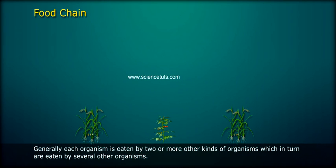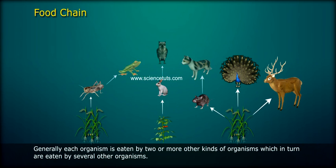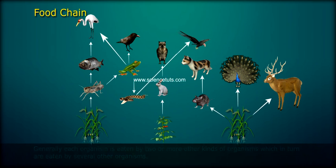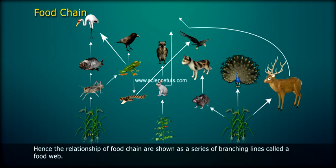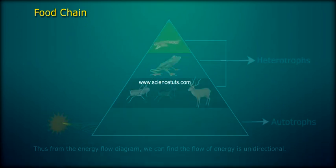Generally, each organism is eaten by two or more other kinds of organisms, which in turn are eaten by several other organisms. Hence, the relationships of food chains are shown as a series of branching lines called a food web.